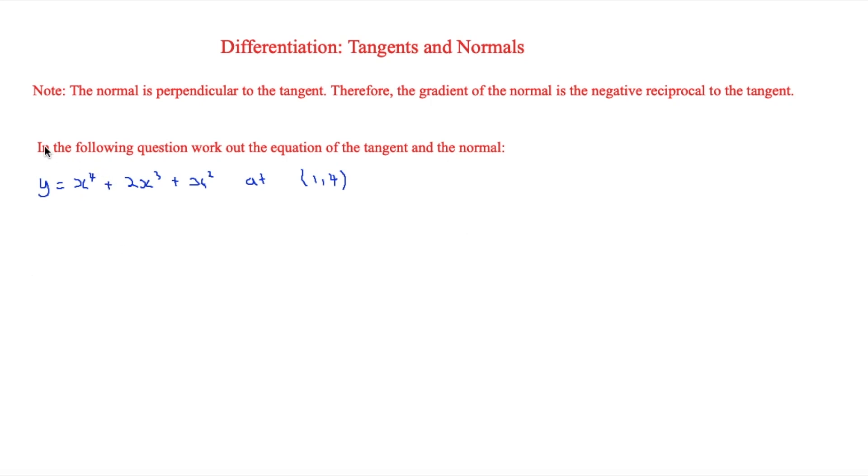The first question we have is: in the following question, work out the equation of both the tangent and the normal. The curve is y equals x to the power of 4 plus 2x cubed plus x squared, at the point (1, 4).